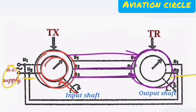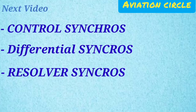The magnetic field produced by the TR rotor causes the rotor to rotate, and the output shaft will rotate accordingly. Thank you.